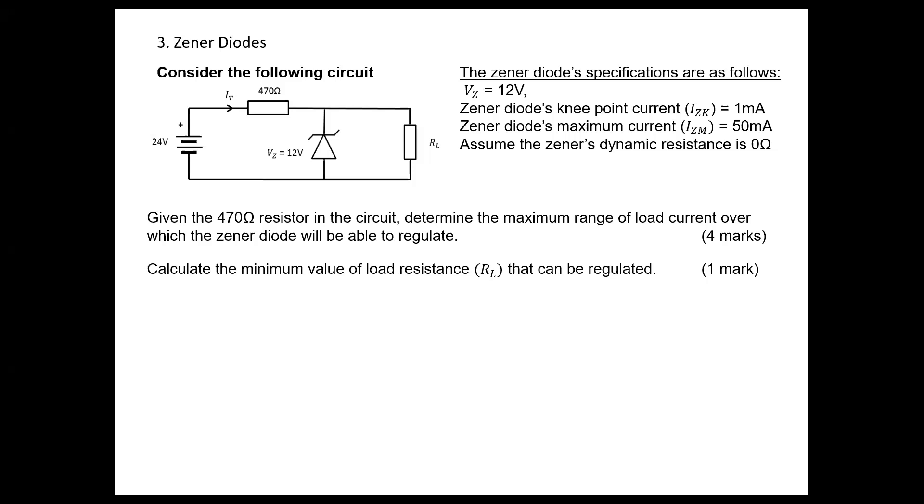We have a load resistor connected. The knee current is given as 1 milliampere, and the maximum current that it can sustain is 50 milliamperes.